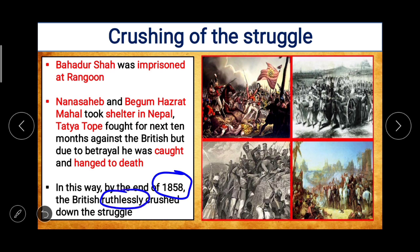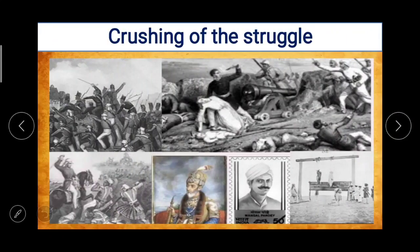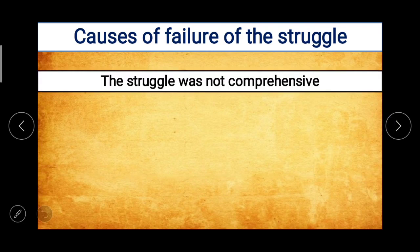By the end of 1858, the British ruthlessly crushed down the struggle using all means. Though the struggle began with discontent among the Indian soldiers, later the peasants, artisans, common people, and tribes came together to fight against the British. In this rebellion, Hindus and Muslims stood up with great force, their common aim being to overthrow the British from India — but even so, it failed.